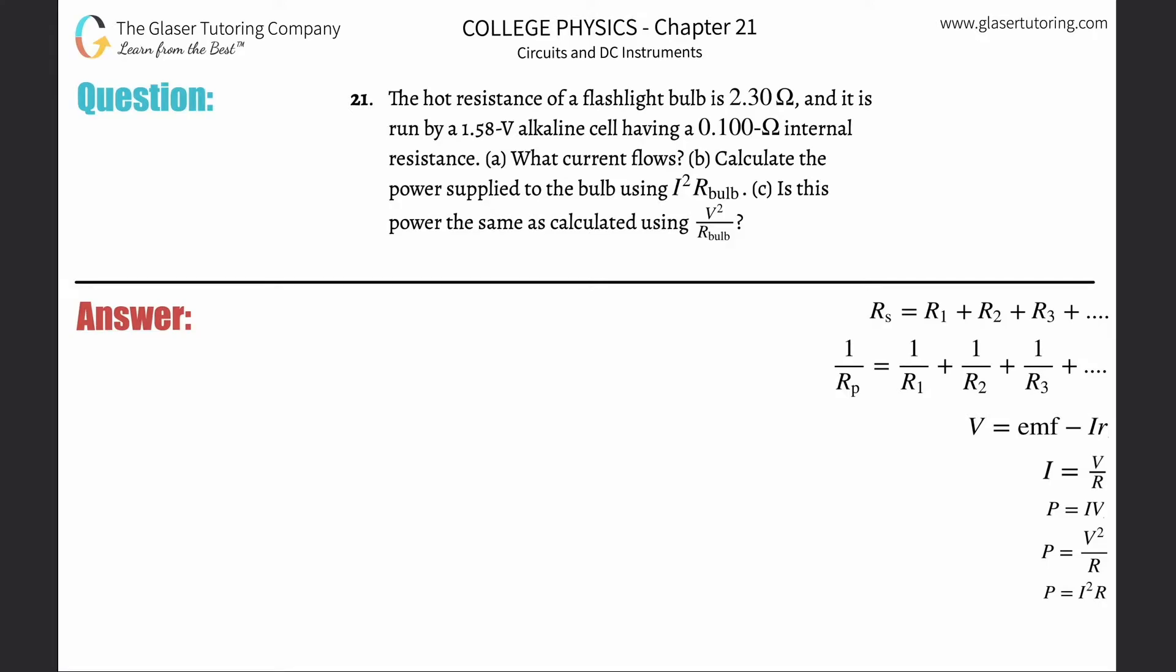Number 21: The hot resistance of a flashlight bulb is 2.3 ohms and it's run by a 1.5 volt alkaline cell having a 0.1 ohm internal resistance. Letter A: What current flows? Alright, so first thing is this voltage that they gave us, this is basically the EMF, right? That's the cell EMF.